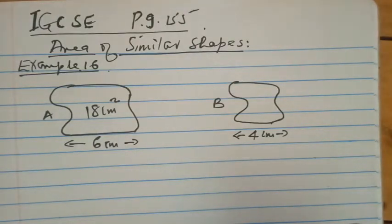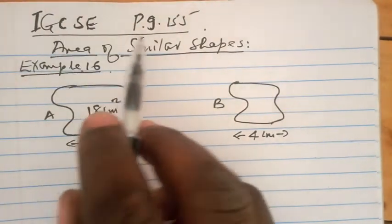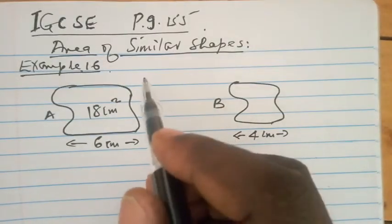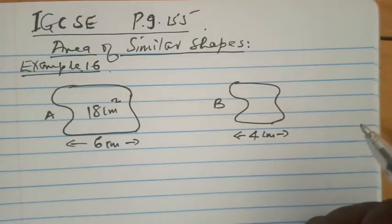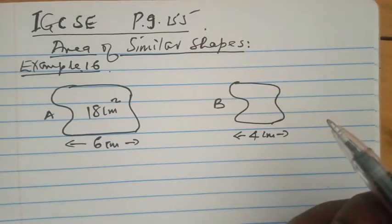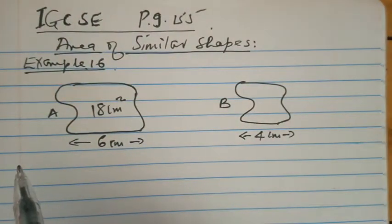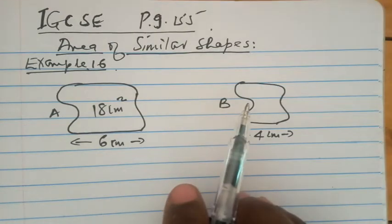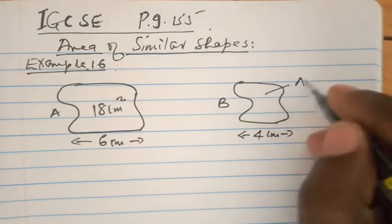Good morning and once again welcome to my YouTube channel PS100XL International Maths by Mr. Kamoto. I want to explain example 16 from IGCSE page 155 on area of similar shapes. We have just talked about linear scale factor and area scale factor and how they relate. Now we are faced with a question which says two shapes shown are similar, and the area of shape A is 18 centimetres squared — find the area of shape B.